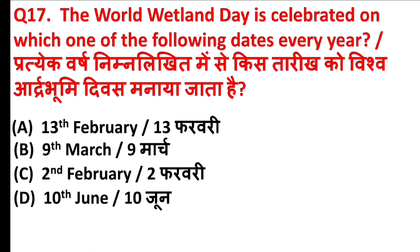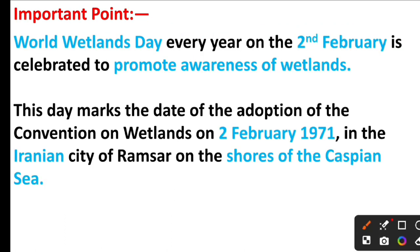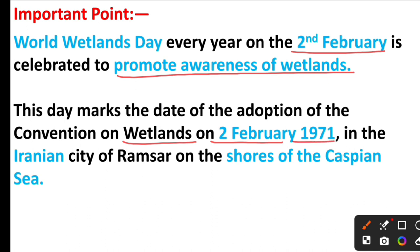World Wetlands Day is celebrated on which one of the following dates every year? The answer is Option C, 2nd February. World Wetlands Day is celebrated every year on 2nd February to promote awareness of wetlands. This day marks the date of adoption of the Convention on Wetlands on 2 February 1971 in the Iranian city of Ramsar on the shores of the Caspian Sea.